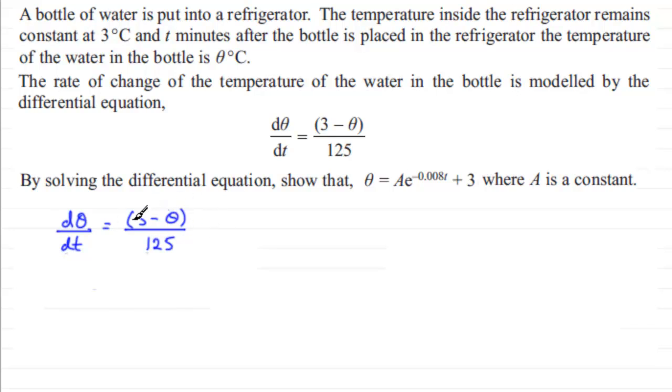Now I divide both sides by (3-θ) and that would leave me with 1 over 125 on the right-hand side. So what I'd therefore have is 1 over (3-θ), and I'm going to remove the dt as well, so I'll be left with dθ equals 1 over 125 dt. So I've separated the variables, all thetas on one side, all t's on the other side.